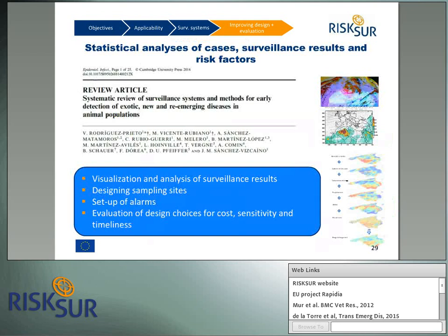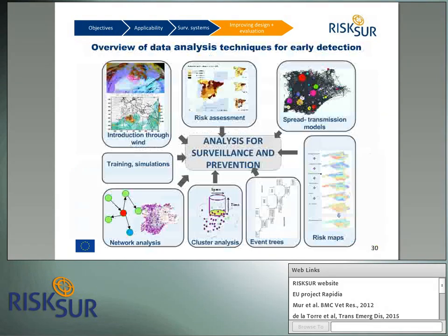These methods have been reviewed in an article published under the RISC-SER framework by Revie, Prieto et al. — a systematic review of surveillance systems and methods for early detection of exotic, new and re-emerging disease in animal populations, with a link available in the weblink box. These tools help to visualise and analyse surveillance results, design or redesign sampling sites, set up alarms, and evaluate design choices for cost, sensitivity, and timeliness. Although research on these data analysis techniques is still ongoing to make them more user-friendly, there are plenty of methods available that will contribute to improved early detection surveillance.